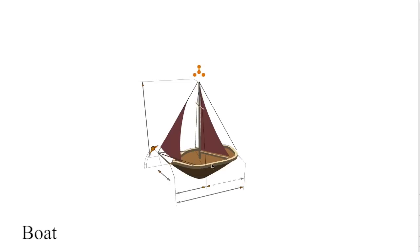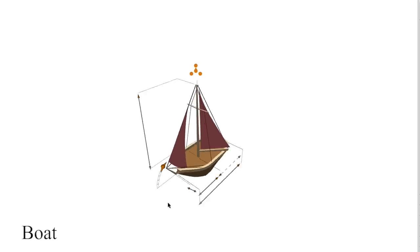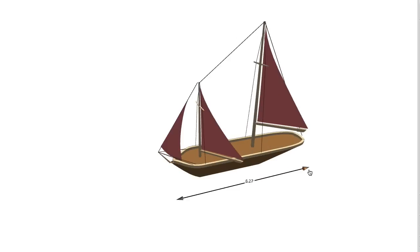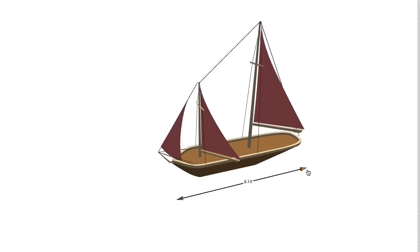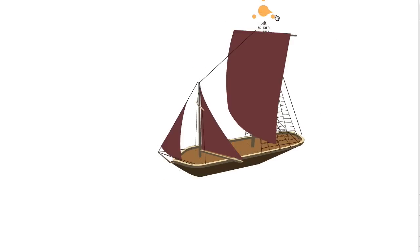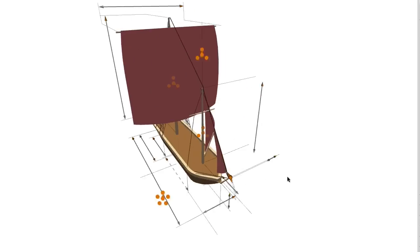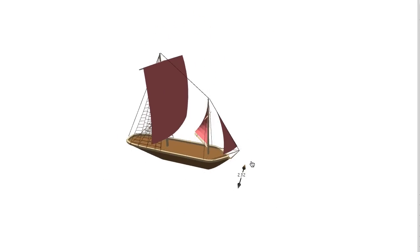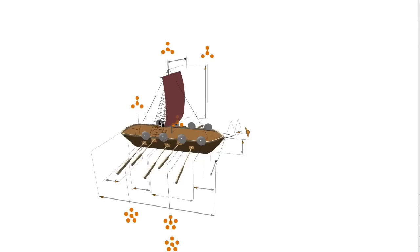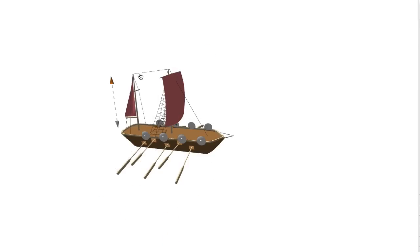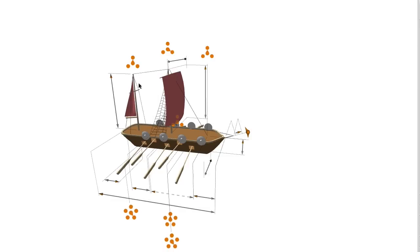The following sequence of clips shows an editing session using our interactive dimension lines. Holding a modifier key shows hidden handles. Here they were hidden because there was zero length.